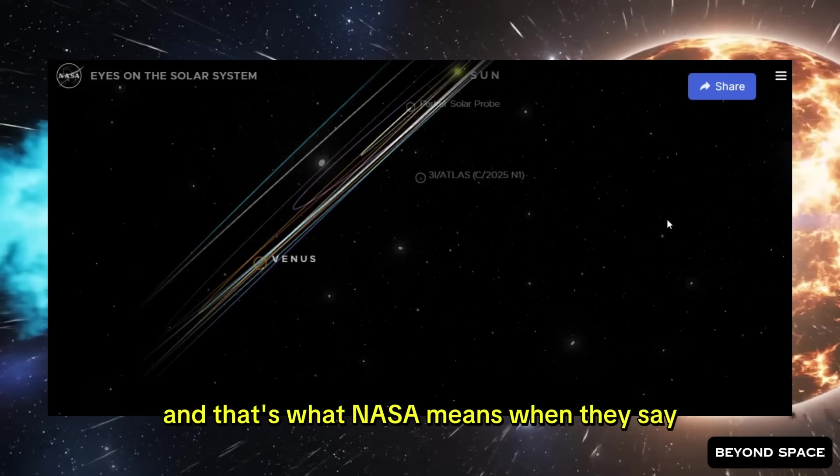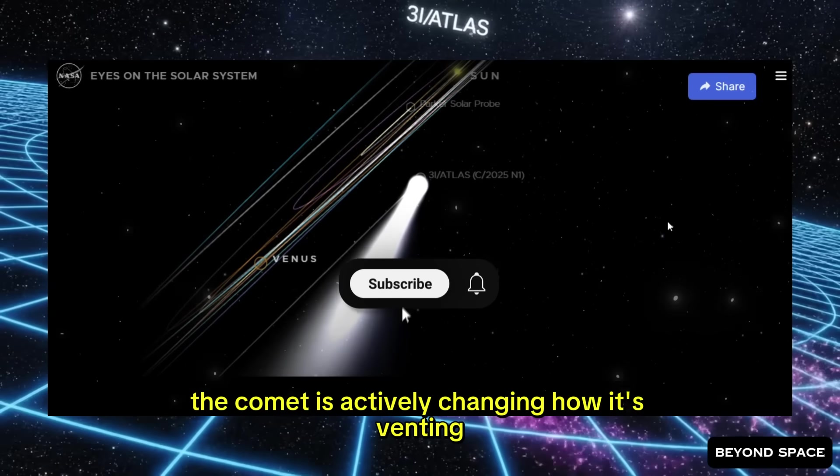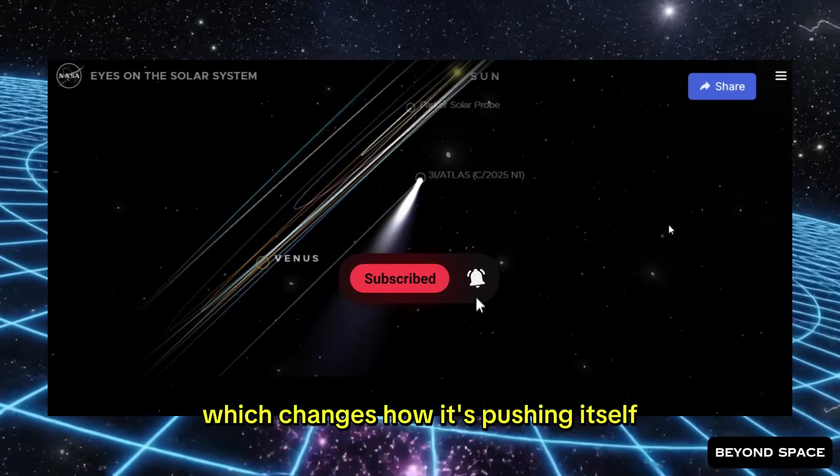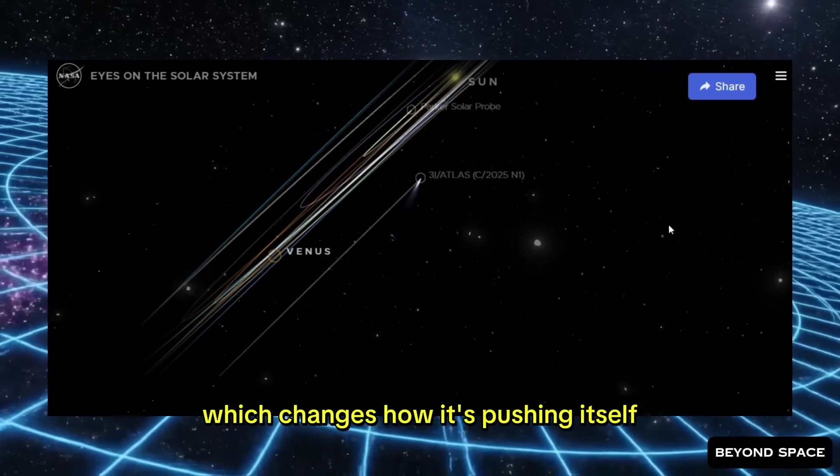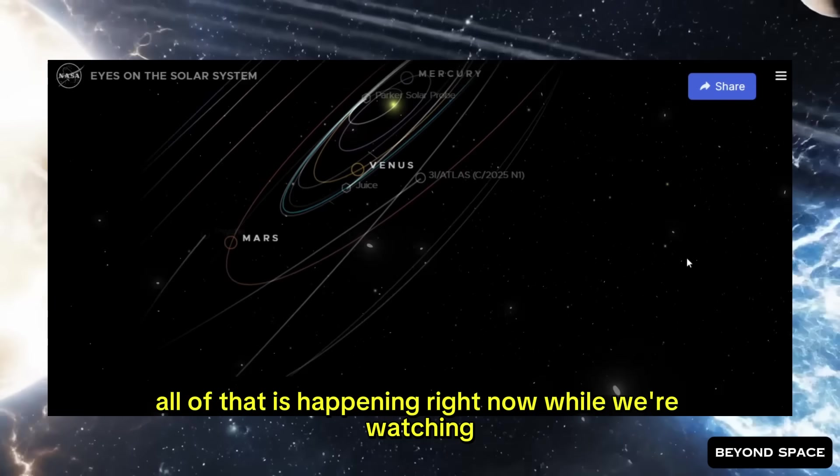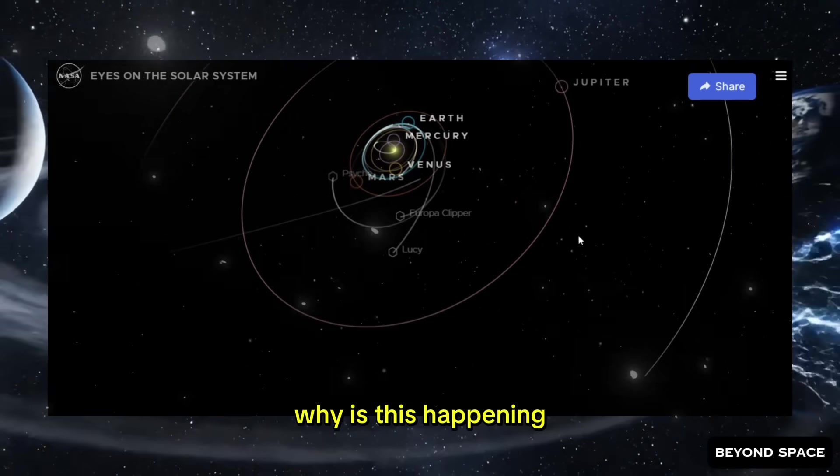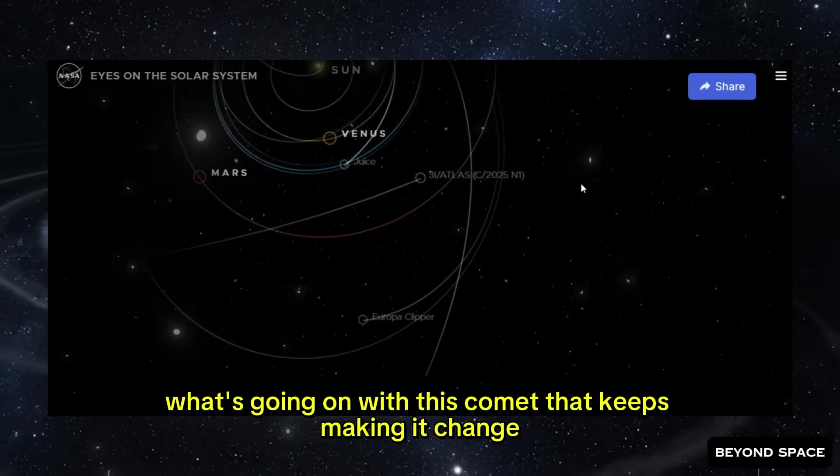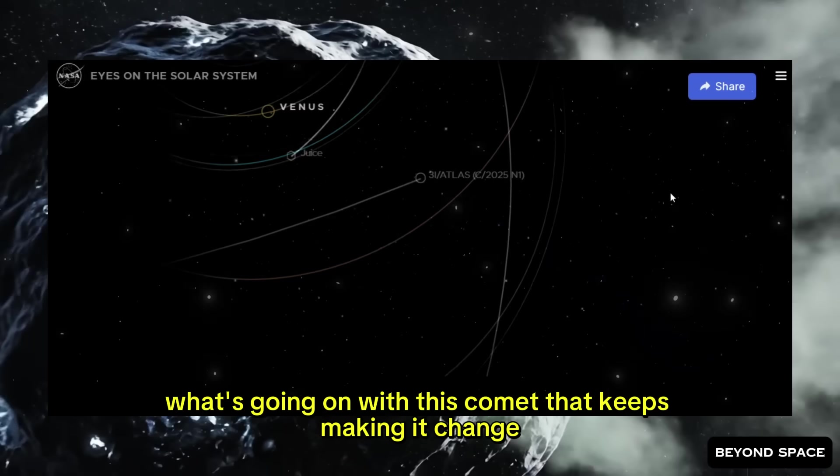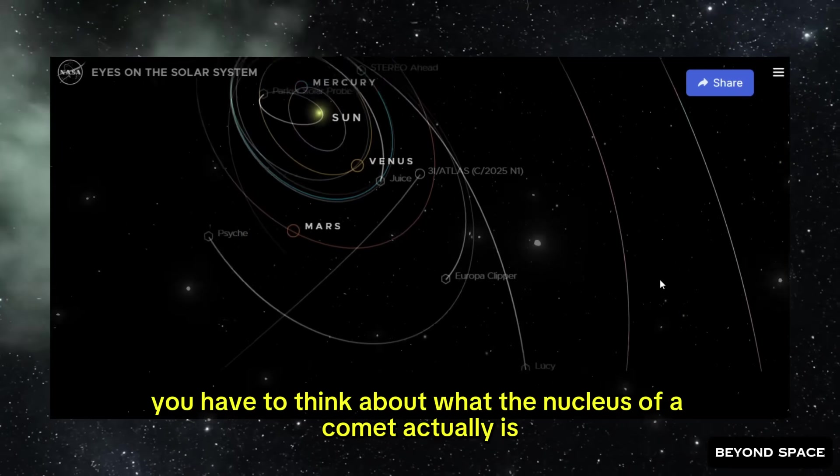And that's what NASA means when they say 3i Atlas has shifted once more. The comet is actively changing how it's venting, which changes how it's pushing itself, which changes its orbit. All of that is happening right now, while we're watching. So the obvious question becomes, why is this happening? What's going on with this comet that keeps making it change? To understand that, you have to think about what the nucleus of a comet actually is.